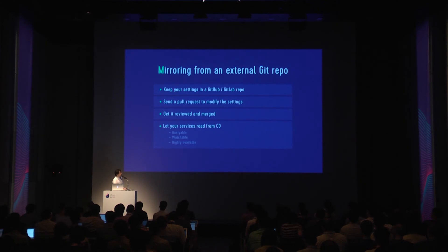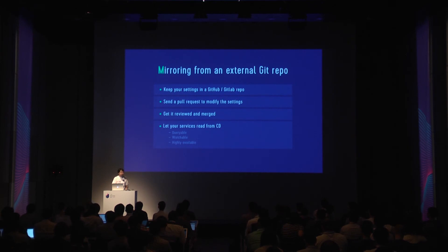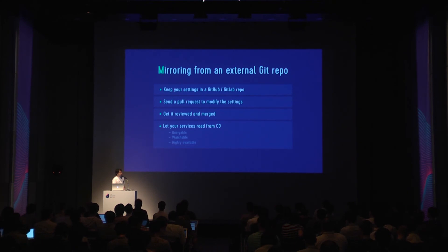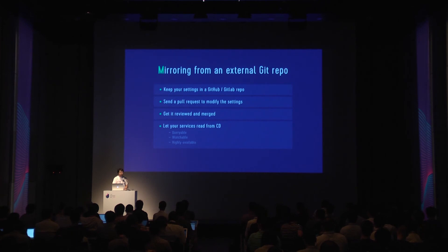At Line we use git-to-Central Dogma mirroring. We keep our original settings in GitHub Enterprise, and when someone wants to apply a configuration change, they send a pull request to the git repository. Once the pull request is reviewed and merged, Central Dogma mirrors it into its repository. The reason we do this is that usually a corporate source code repository is not highly available — it's backed up, but if it's down you have to wait until it's fully recovered before you can access or change anything.